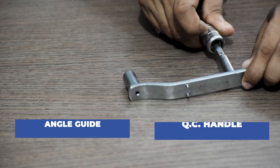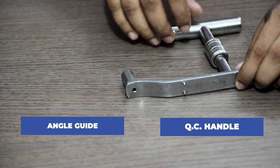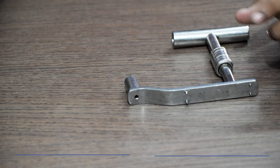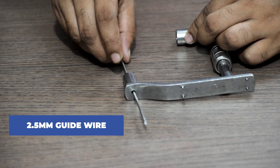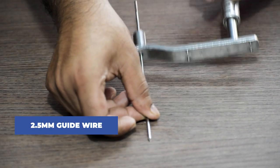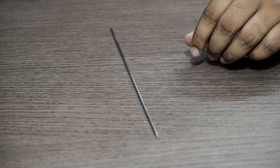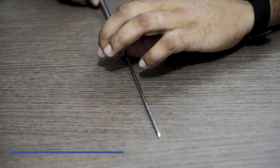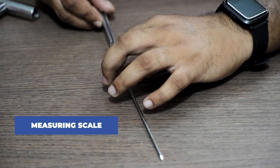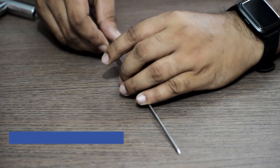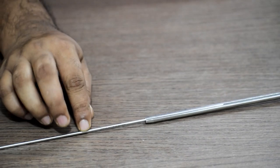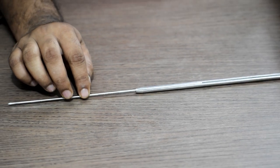First we will take the angle guide and fix the QC handle attachment to it. Once done, we will insert the 2.5 mm guide wire through this hole into the fracture site and then remove the angle guide. The guide wire stays back. Next we take the measurement of the guide wire using a measuring scale. We measure the length of the guide wire inserted in the femoral neck.